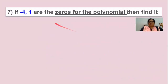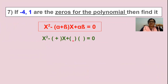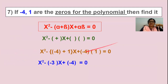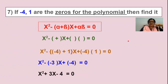Seventh problem: if minus 4 and 1 are the zeros for the polynomial, find the quadratic polynomial. Write the pattern first using brackets in place of alpha and beta. This place is for minus 4 and this place is for 1. Substitute: minus 4 plus 1 gives minus 3, and minus 3 times minus 3 is plus 9, but the product term gives minus 4. You will get the same quadratic polynomial.